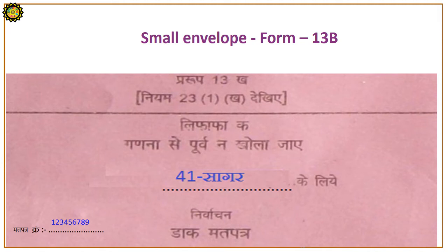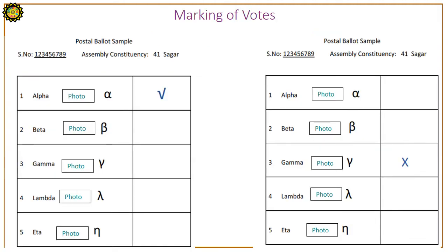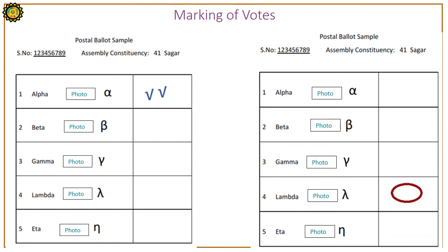Form 13B (small envelope) contains the serial number of the ballot paper and the name of constituency. Votes on the ballot paper can be marked by pen; no specific symbol is defined. Any mark should not disclose the identity of the elector. Examples of valid votes: a tick mark for candidate Alpha, or an X mark for candidate Gamma, or two tick marks in front of a candidate, or a circle – all are valid votes.